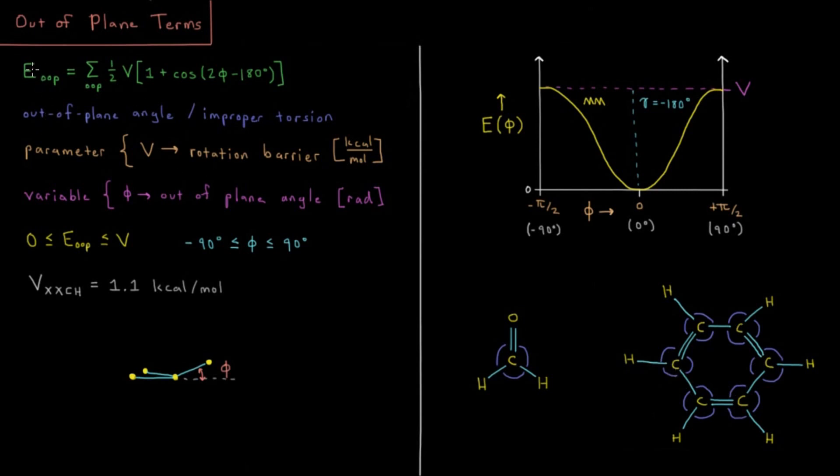The out-of-plane energy is a sum over all of the out-of-plane angles, and then we get a function which looks pretty similar to our torsion energy term from the previous video. We have one-half the rotation barrier times one plus cosine of two phi minus 180 degrees.